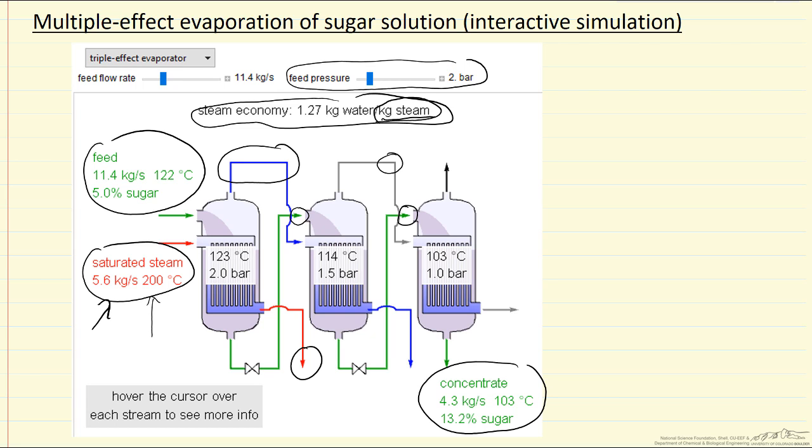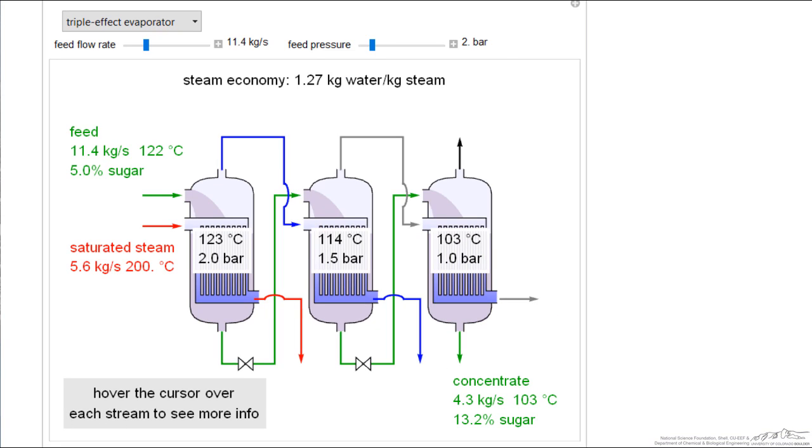Let's look at the simulation to better understand the behavior. You can hover the cursor over each stream to get more information. Looking at the saturated steam leaving the first effect, it gives the flow rate and temperature, and likewise for the second effect. The saturated water from the heat exchanger shows the flow rate - the same as the incoming steam.